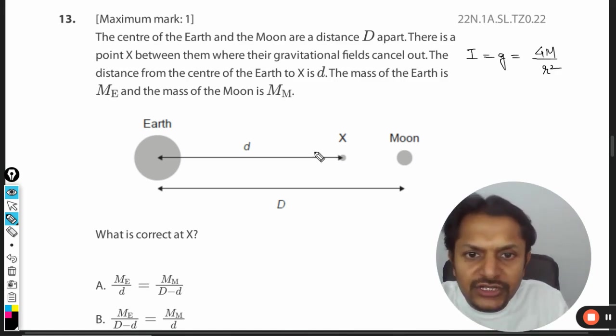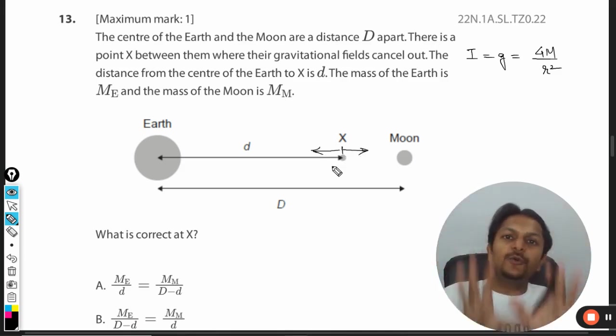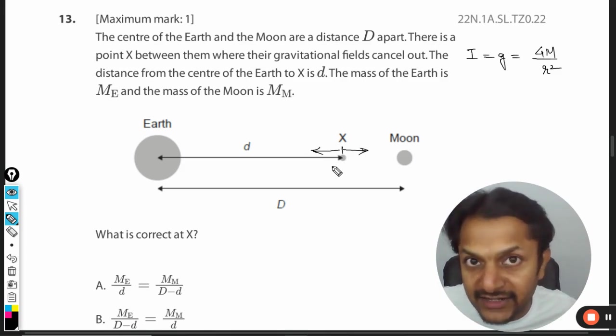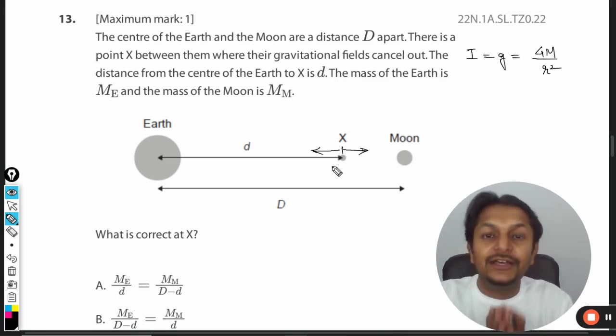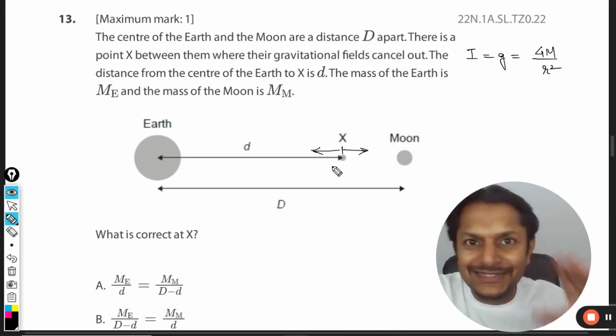This is the gravitational field intensity at that point. According to the question, this force is equal to this force. That is what I have done. I just equated these two and got C as the correct answer. Dear students, thanks for watching. This is Professor Burun. Please join the YouTube channel if you want to learn the lectures of gravitation. All the best.